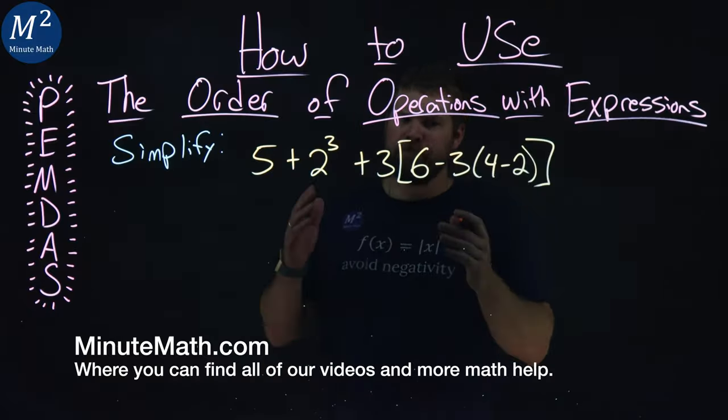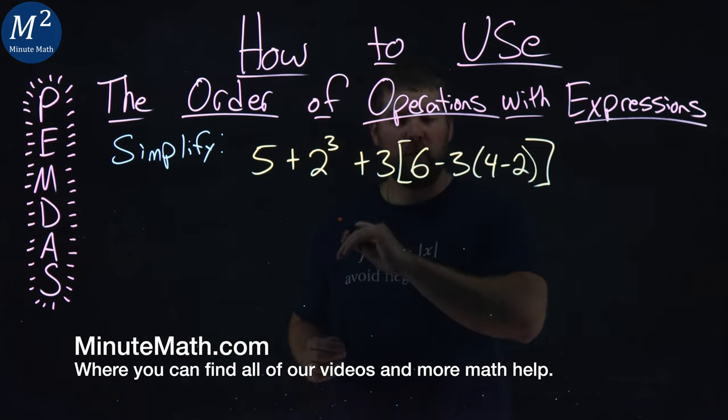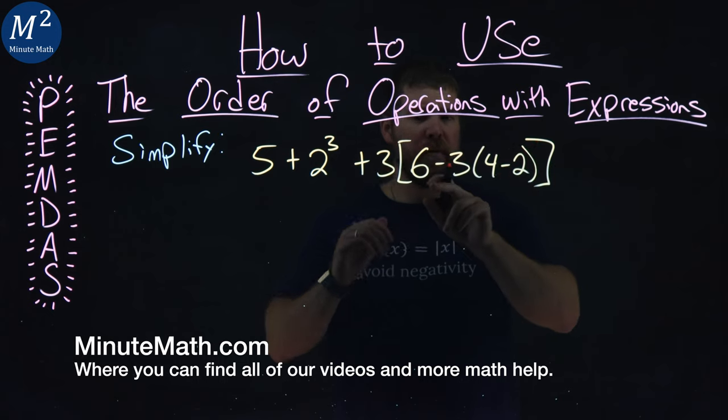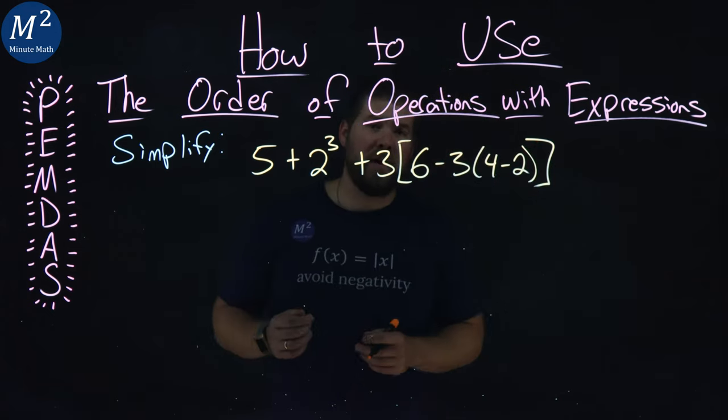We're given this rather large expression: 5 plus 2 to the 3rd power plus 3 in brackets here, 6 minus 3 in parentheses, 4 minus 2. We have to simplify this expression.